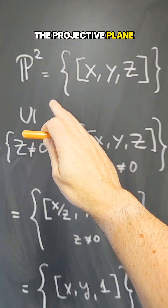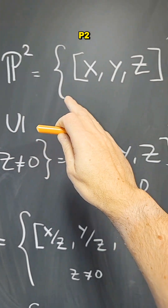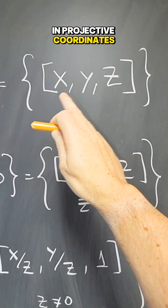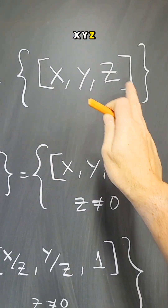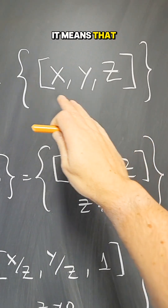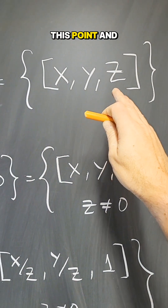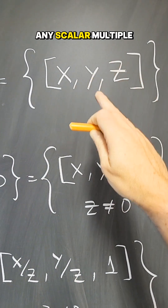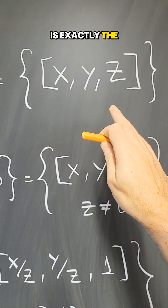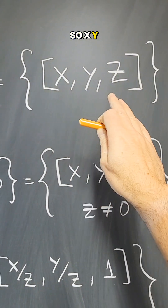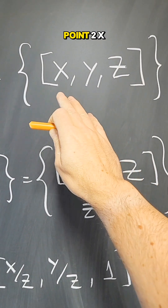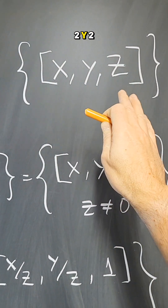Let's start with the projective plane P², which is given in projective coordinates x, y, z. In projective coordinates, this point and any scalar multiple of this point is exactly the same point — so x, y, z is the same as the point 2x, 2y, 2z.